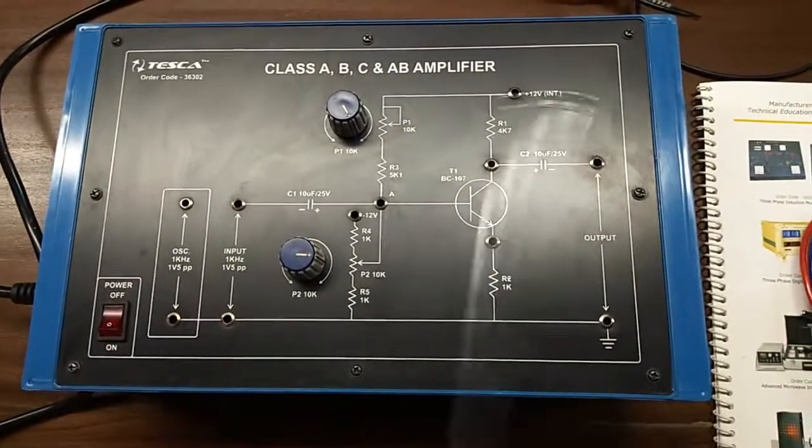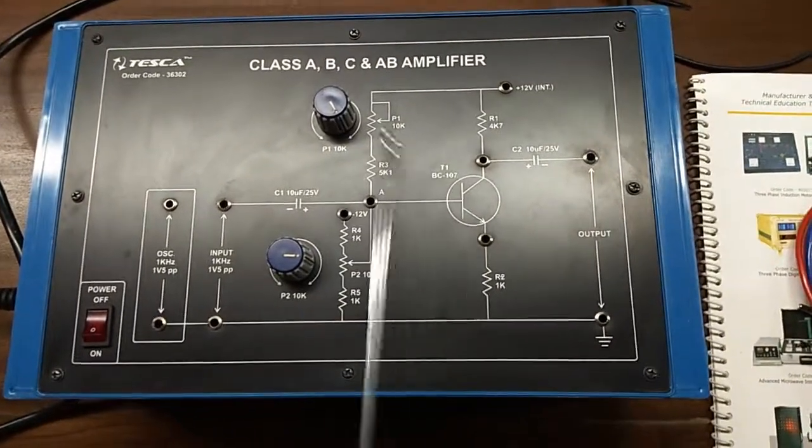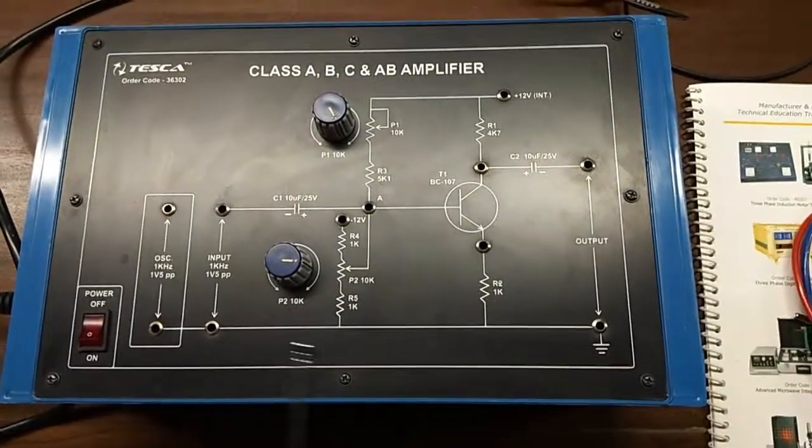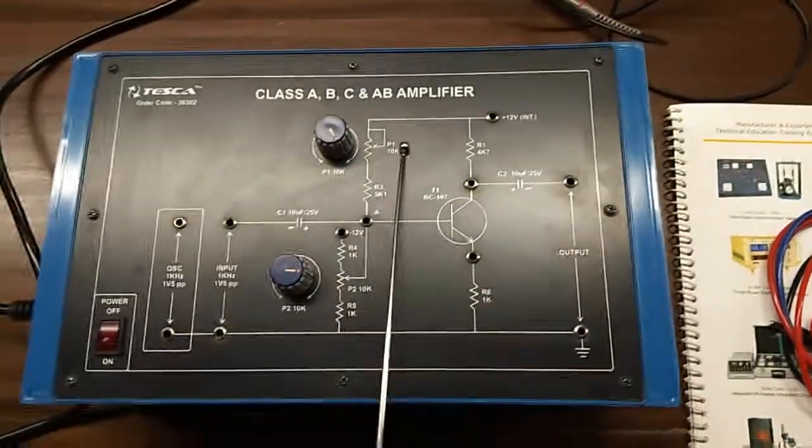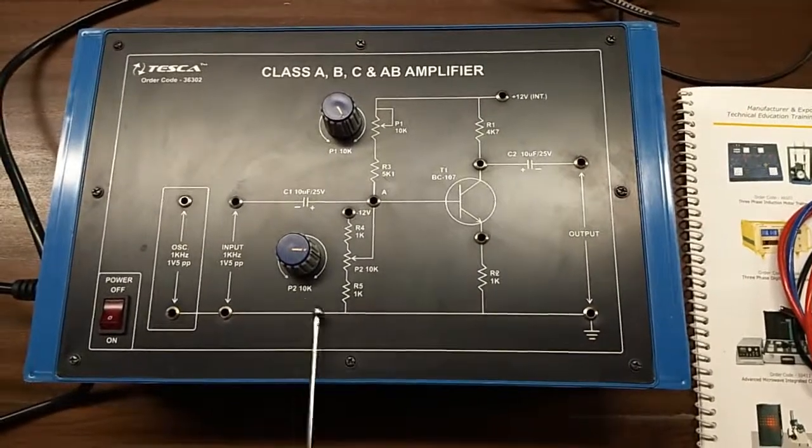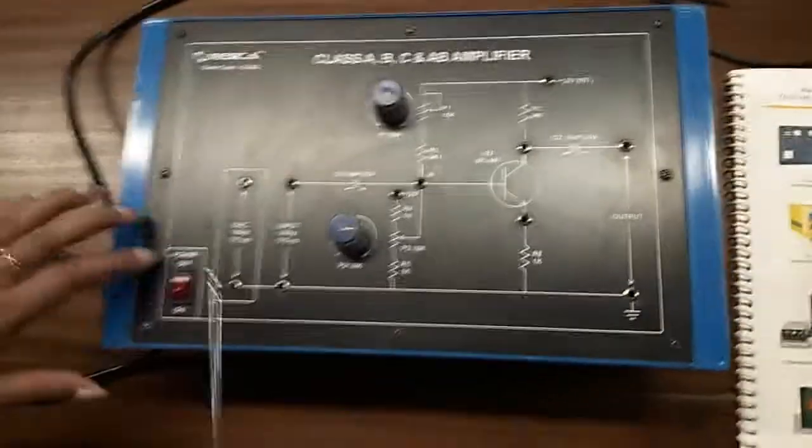This is the trainer kit. This is the mimic diagram given on the trainer kit. There are 2 potentiometers, P1 and P2, and both are 10k.